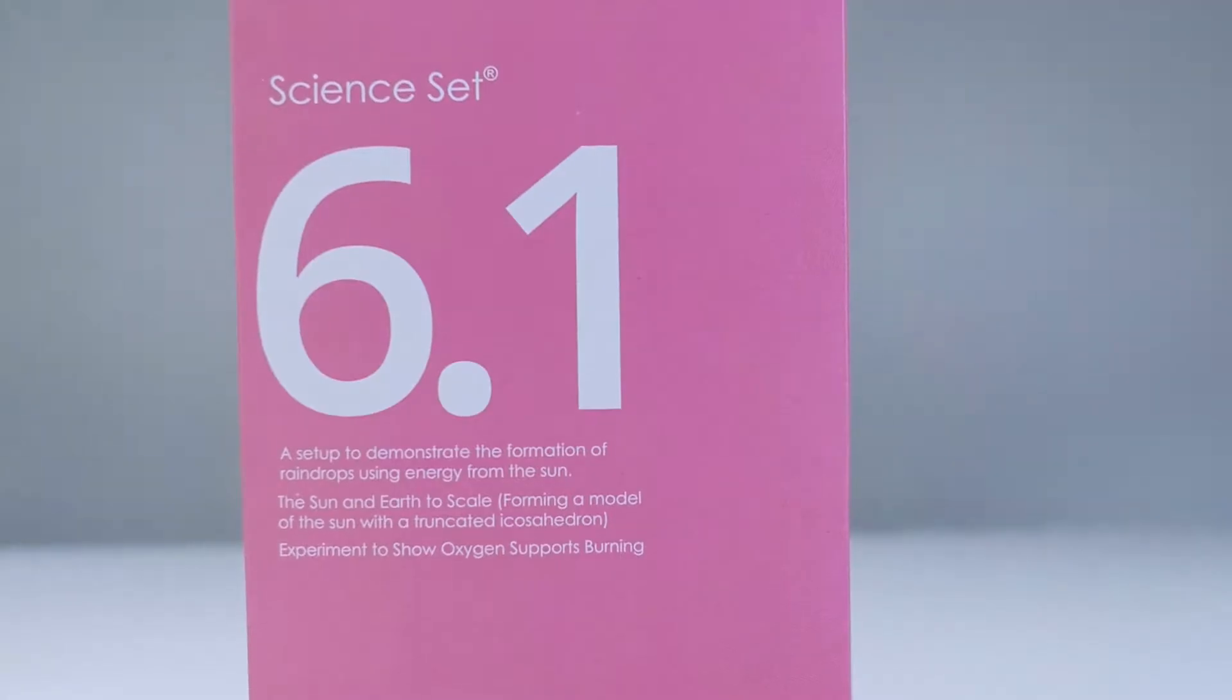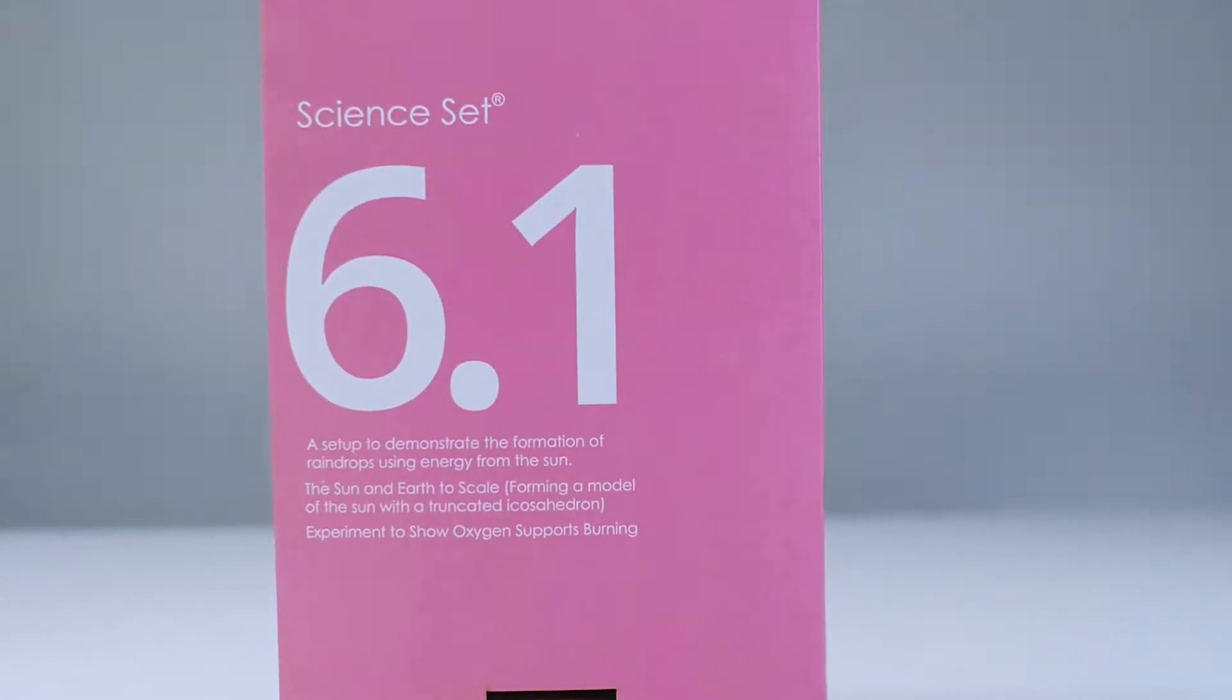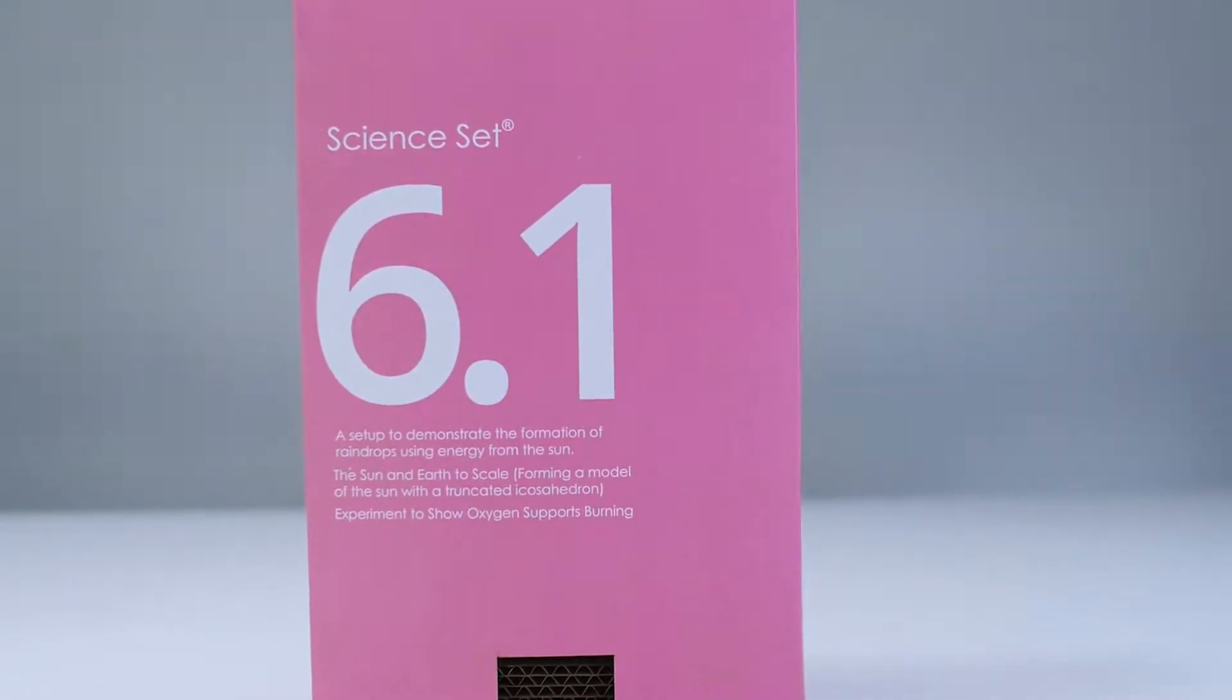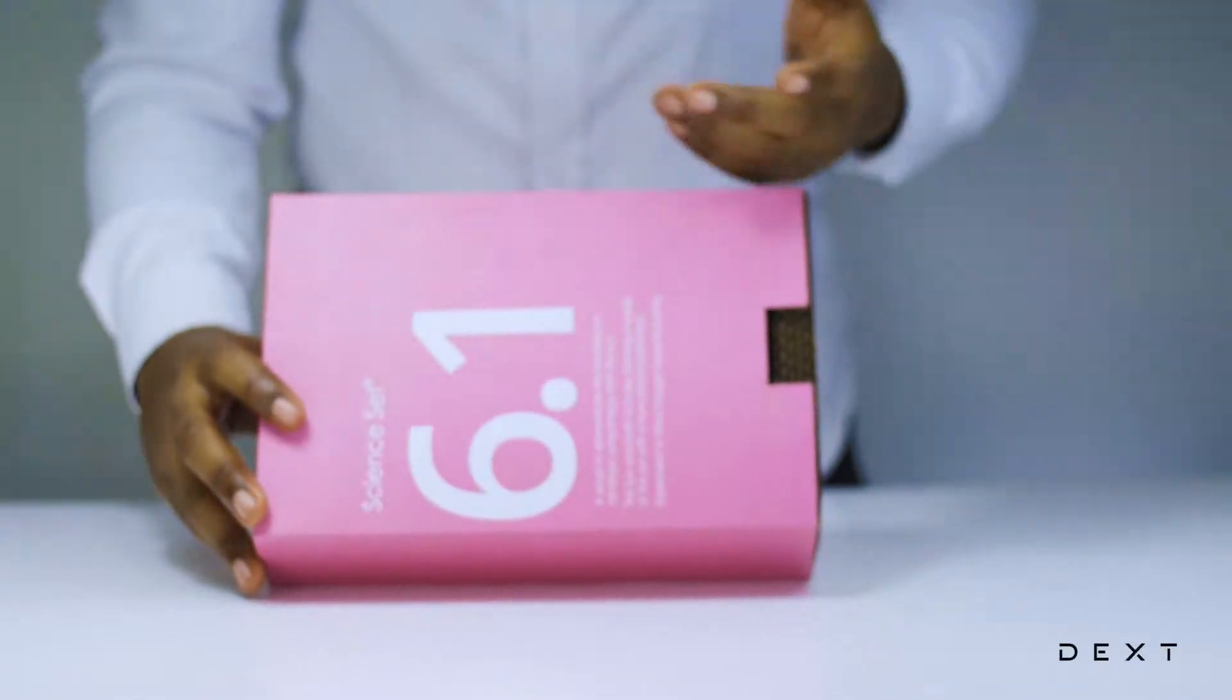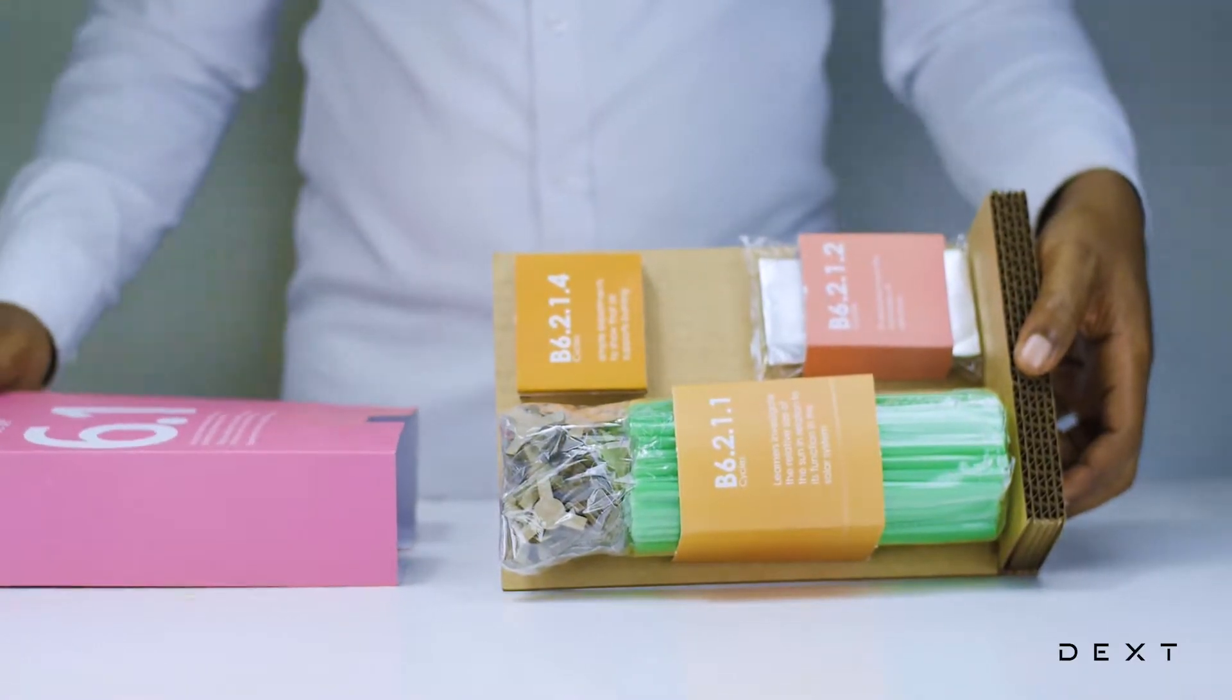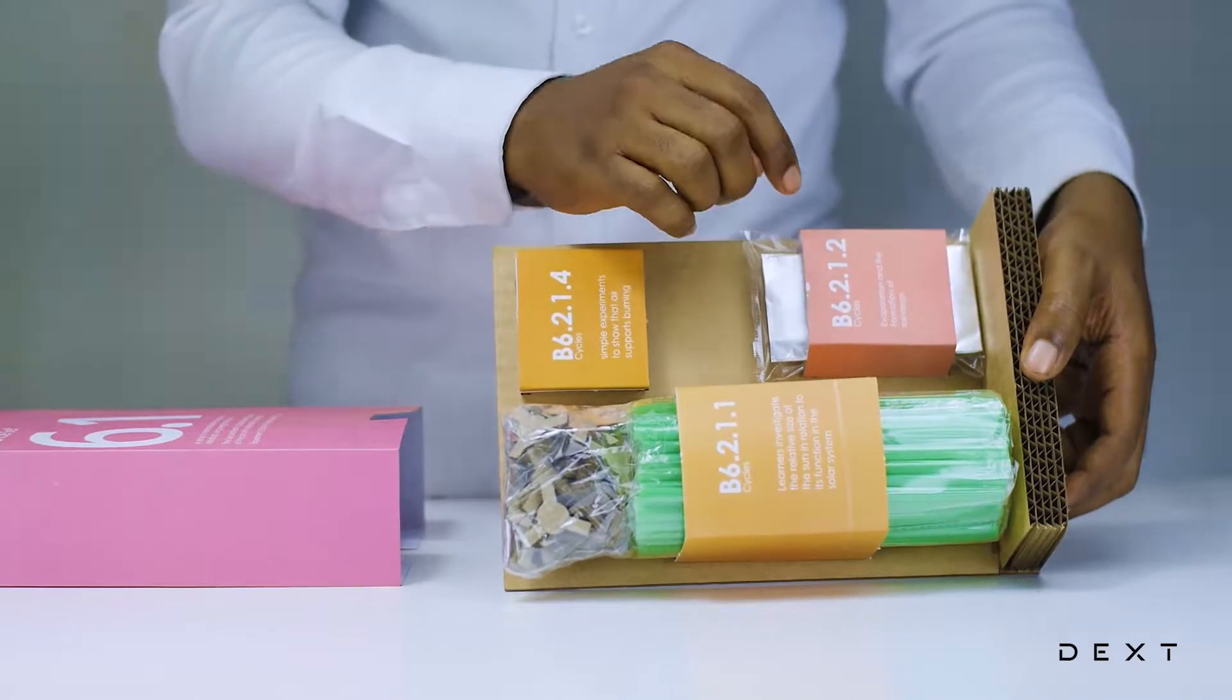This is a tutorial for DexSignSet 6.1. Hi, in this video, we are going to build a model to demonstrate the formation of raindrops. The compartment we are going to get the materials from is B6.2.1.2.1.